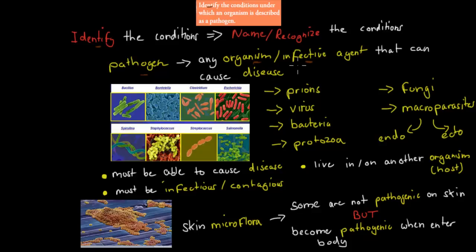I'd prefer 'any organism or infective agent' because prions, for example, are infective agents. Examples of pathogens include prions, viruses, bacteria, protozoa, fungi, or macroparasites. You should also know that not all of them are actually pathogens — we have some good bacteria that won't be pathogenic, whereas we have some bad bacteria that will be pathogenic. So if it causes disease, then it is pathogenic.